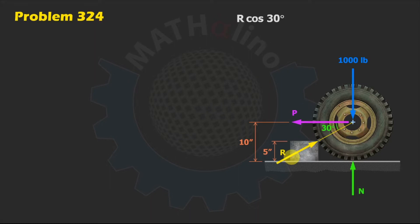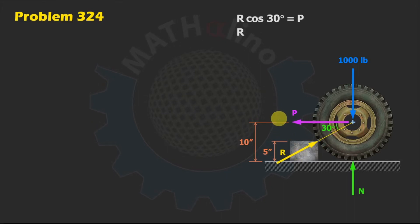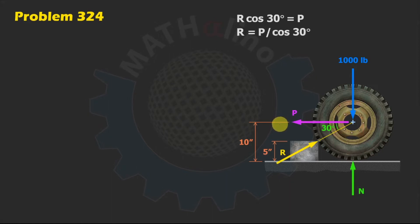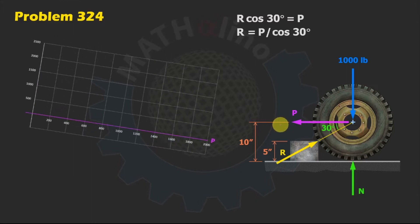If we sum up forces in the x-direction, we have R cosine 30 degrees to the right equal to force P to the left. Solving for R in terms of P, this becomes R = P divided by cosine of 30 degrees.